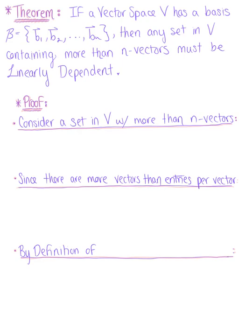Here is our first important theorem of the section. If a vector space V has a basis defined by the set of vectors b_1 through b_n, then any set in the vector space containing more than n vectors must be linearly dependent.